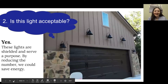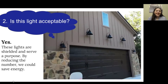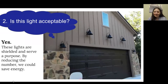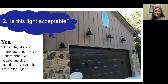Number two: these lights are acceptable. They are definitely serving a purpose above that garage, and they are definitely shielded — we aren't able to see the light source. By reducing the number of these lights from five to three, we could still see and save some energy. These lights are definitely acceptable, though we would need to investigate more to learn about color temperature and whether they are controlled.